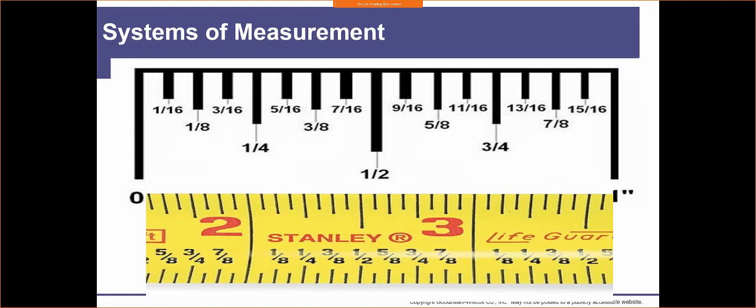Know that there are twelve inches in a foot and three feet in a yard. Generally in the field it's going to be inches and feet. You can measure a room in feet and inches — say it's ten feet, three and one-eighth inches — or measure entirely in inches, like 123 inches with an eighth at the end.